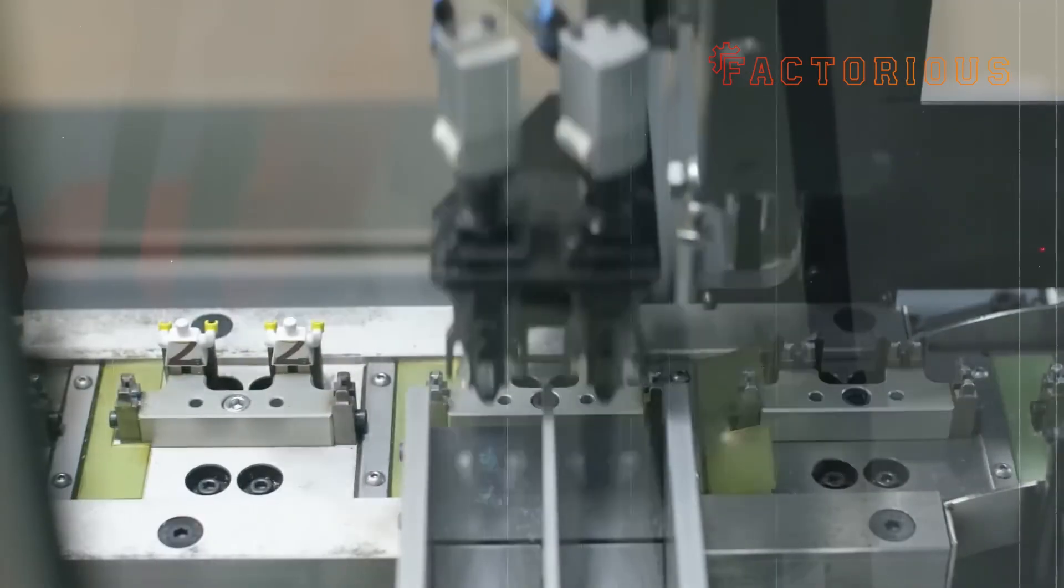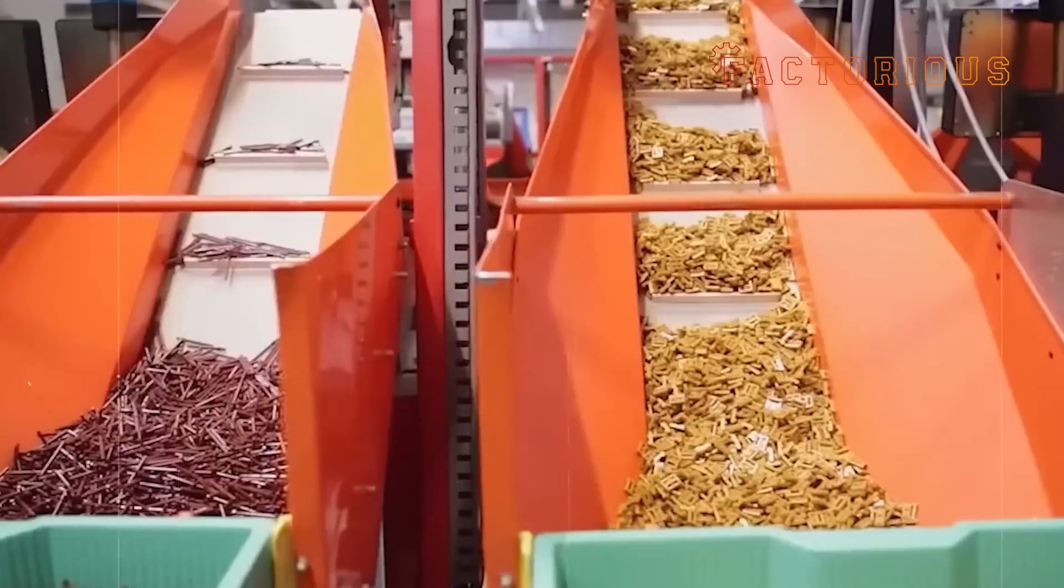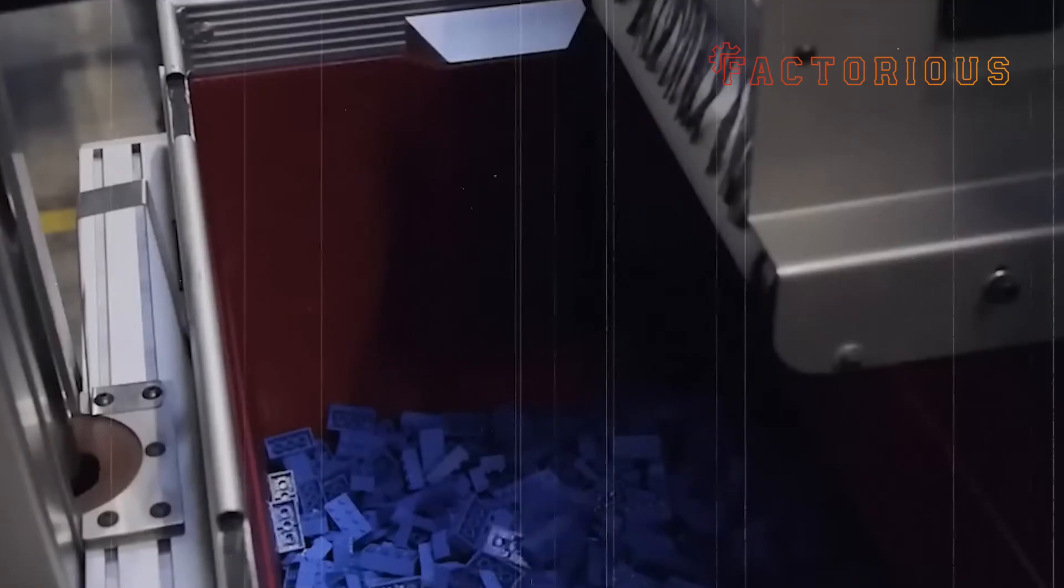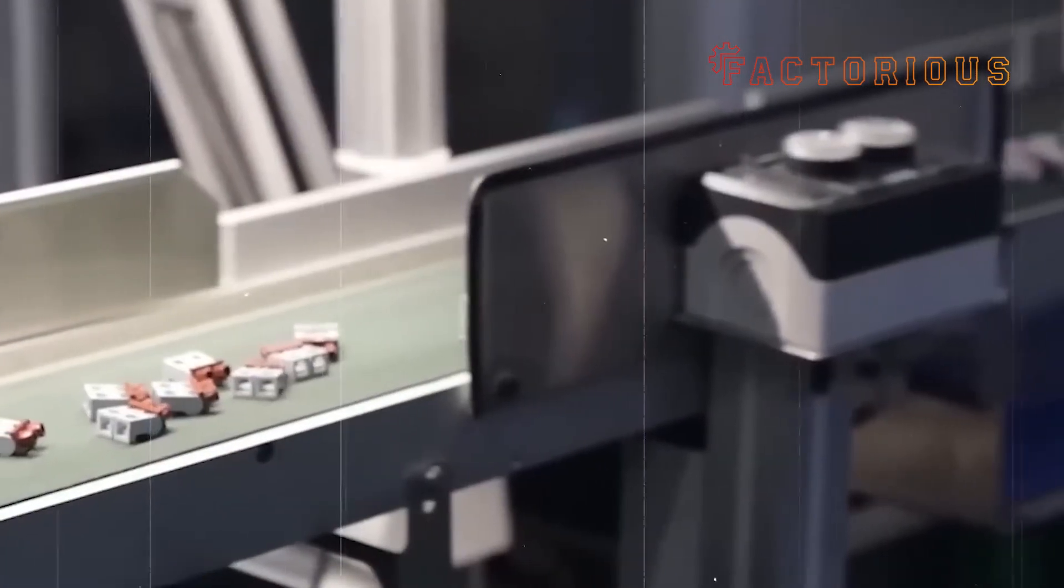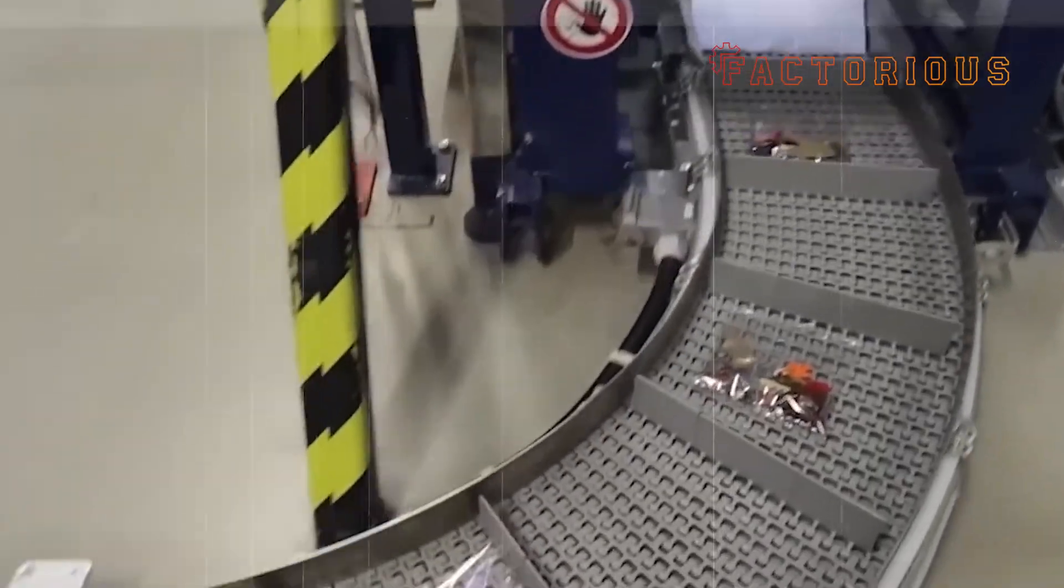Every single batch goes through automated optical scanners to detect even the tiniest defect – a bubble, a scratch, or a color inconsistency. If any flaw is detected, that piece doesn't make it into a set. Lego destroys defective bricks on-site and recycles the material right back into production, so nothing is wasted.